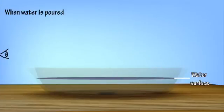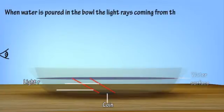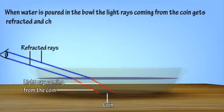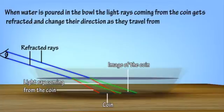When water is poured in the bowl, the light rays coming from the coin get refracted and change their direction as they travel from water to air.